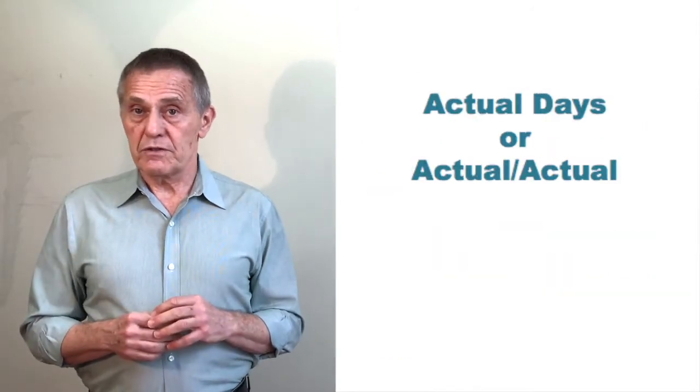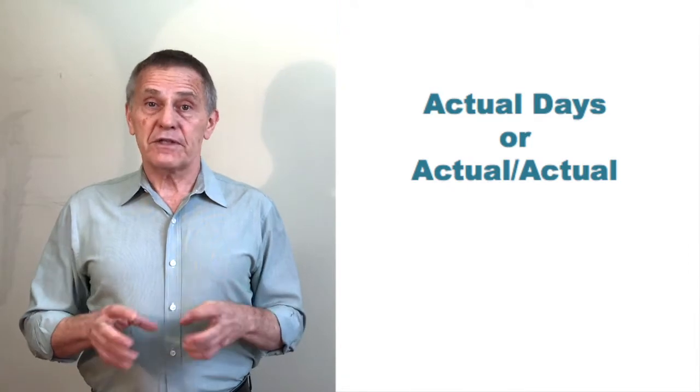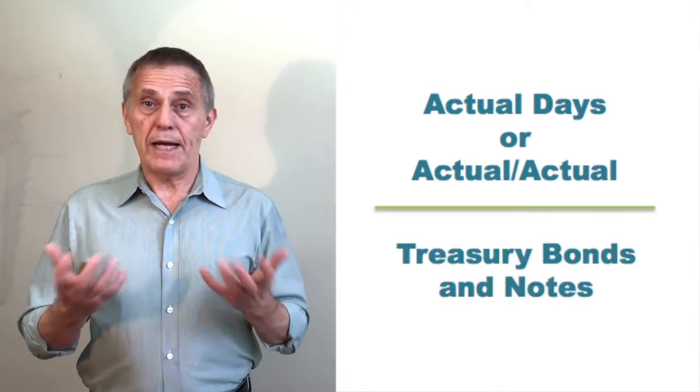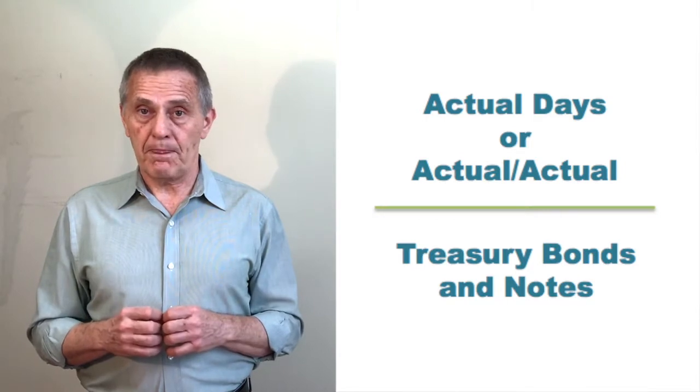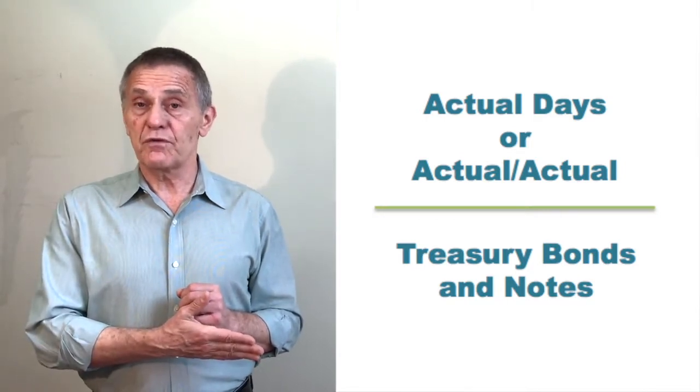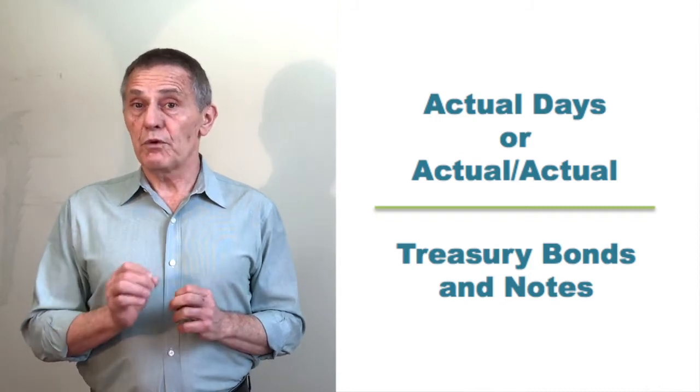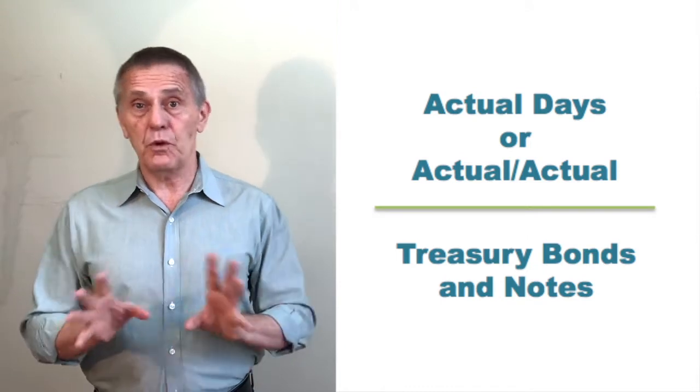Now, the last of the three conventions, actual days or actual over actual, that's the convention used by treasury bonds and treasury notes. In other words, coupon treasury securities. Now, most books where I've encountered a discussion of the day count convention for treasury bonds and notes, they'll refer to it as actual over 365. And that's wrong. It's actual over actual.